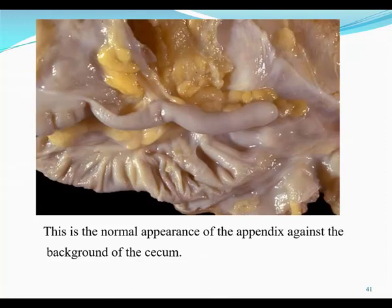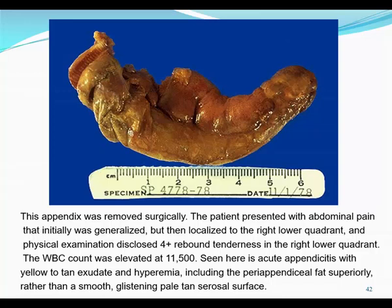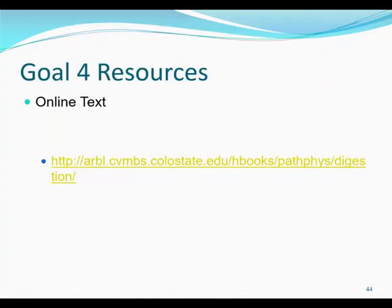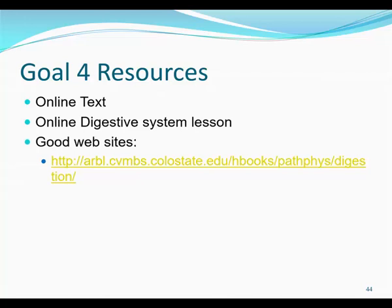This is a normal appearance of an appendix, and this is a not-so-normal one. People generally have a high white blood cell count and rebound tenderness in the lower right quadrant when they have appendicitis. Here's a histology slide of the lining of the colon — you can see many goblet cells because mucus is the main secretion of the large intestine. Check out your online text and online lesson; you can also Google to get more information about the anatomy of the digestive system.